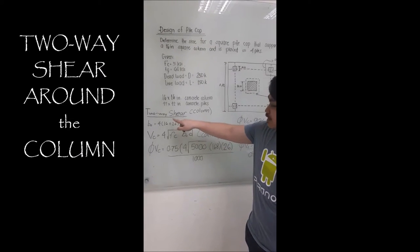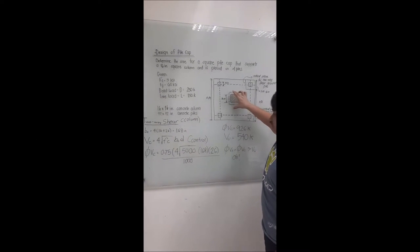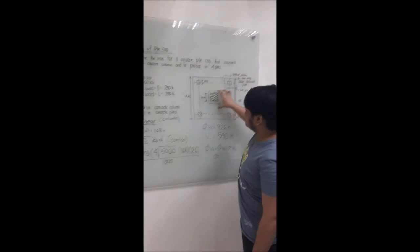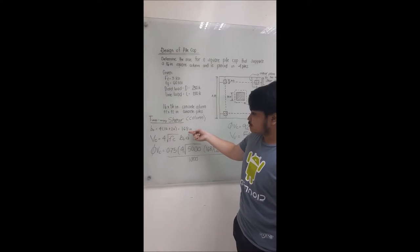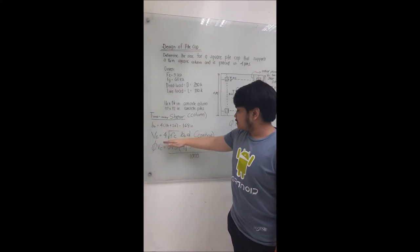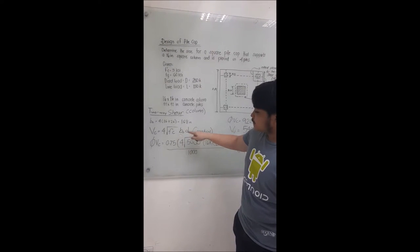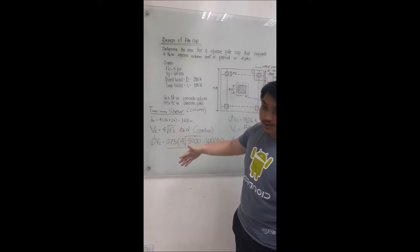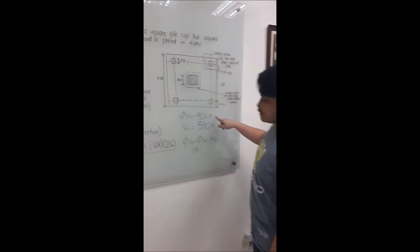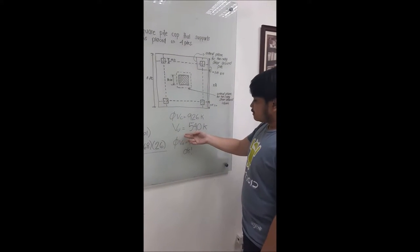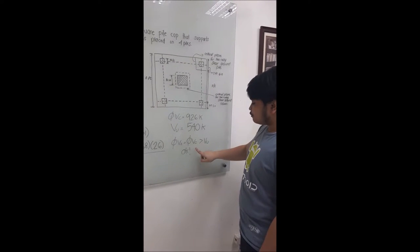To solve for the two-way shear or also known as the punching shear around the column, first we would need to solve the perimeter in which the punching shear would take effect. To solve for the nominal shear, just substitute the values and we would arrive at a capacity of 926 kips. Earlier we have solved that the ultimate shear is 540 which would mean the column is adequate for the punching shear.